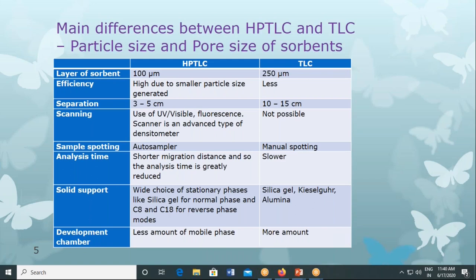Separation in HPTLC can be achieved in 3 to 5 centimeters, whereas in TLC it takes about 10 to 15 centimeters of travel before separation is complete. Regarding scanning, UV, visible, and fluorescence can be used for scanning in HPTLC. The scanner used in HPTLC is an advanced type of densitometer.